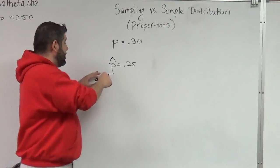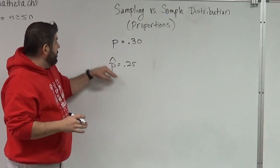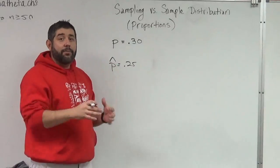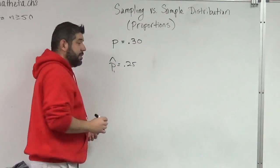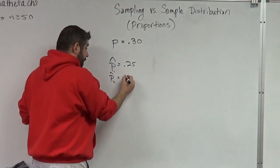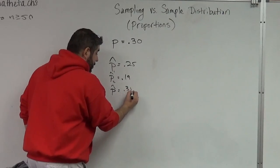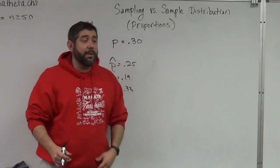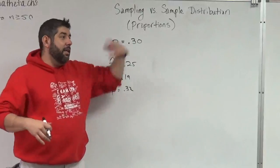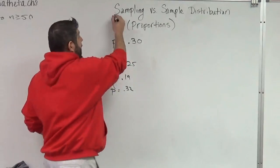That's a sample proportion — P-hat equals 0.25. But that's not exactly the true proportion, so maybe I take another sample. I go out and take another random sample of 100 — that's P1-hat. Then P2-hat gives me 19, then another sample gives me 32, and I keep sampling — 100, another 100, another 100. I'm sampling a bunch of samples, and that is how I'm going to get a sampling distribution.